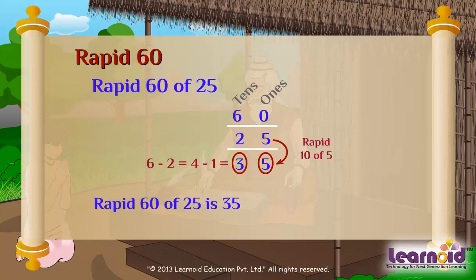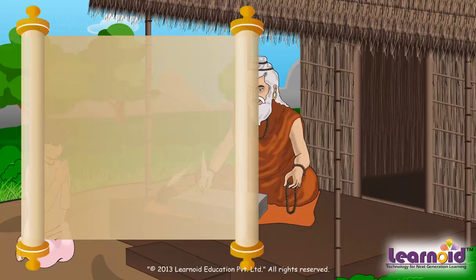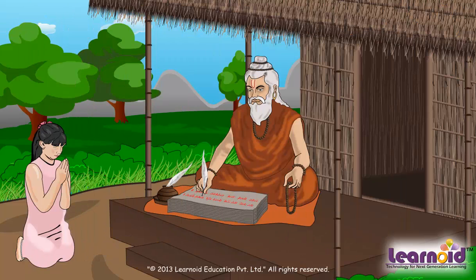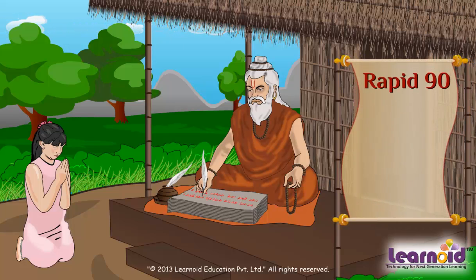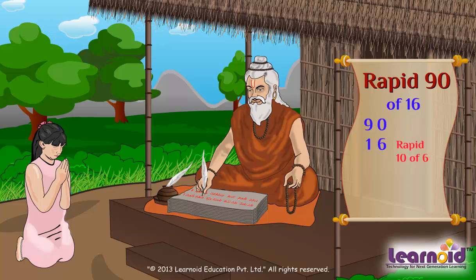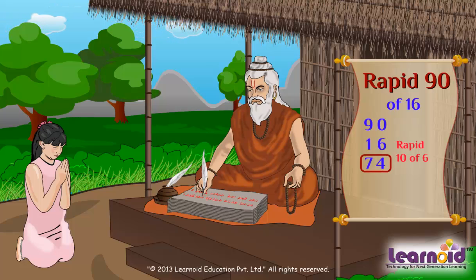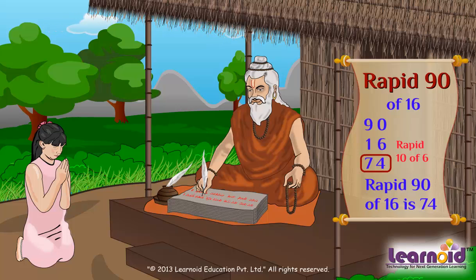Now you are master of rapid 10 rules. Let's do one more — this time all mentally. Rapid 90 of 16. Rapid 10 of 6 is 4. 9 minus 1 is 8, minus 1 is 7. So rapid 90 of 16 is 74.